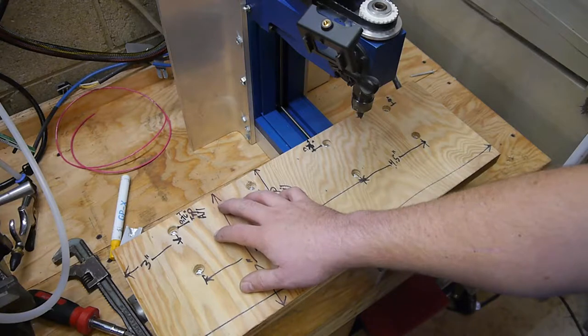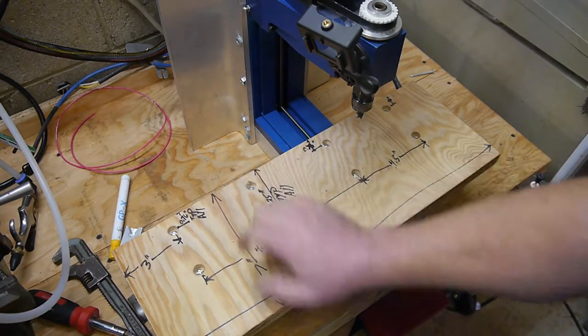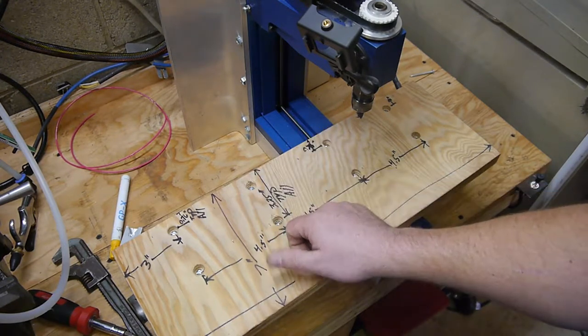So I've written down the dimensions roughly of all this. So this is a 20 inch by 7 inch piece of 1 inch thick plywood, marine grade plywood.